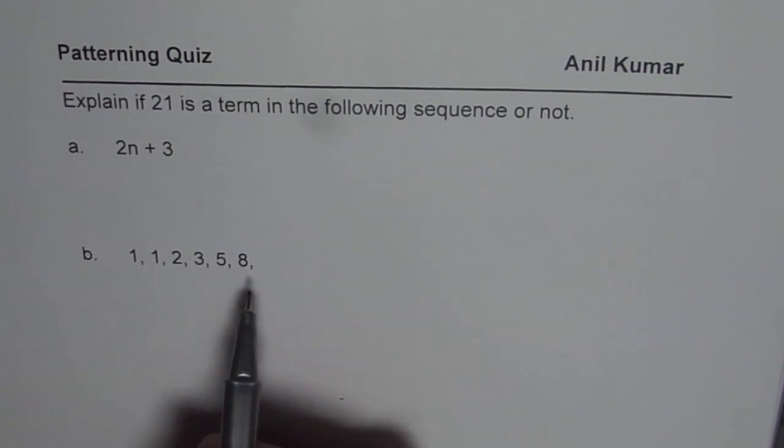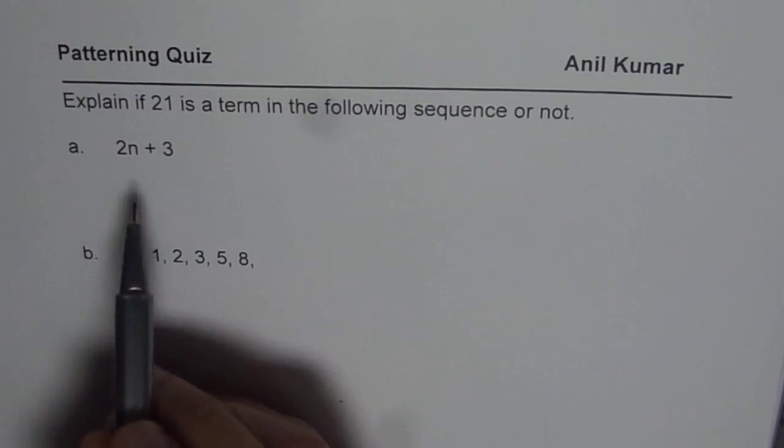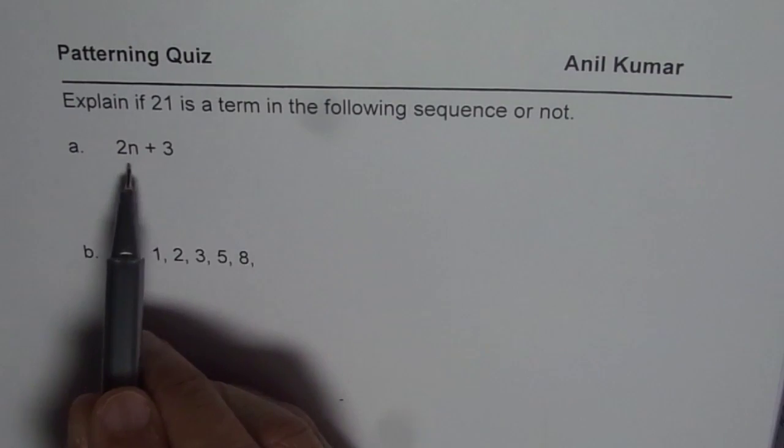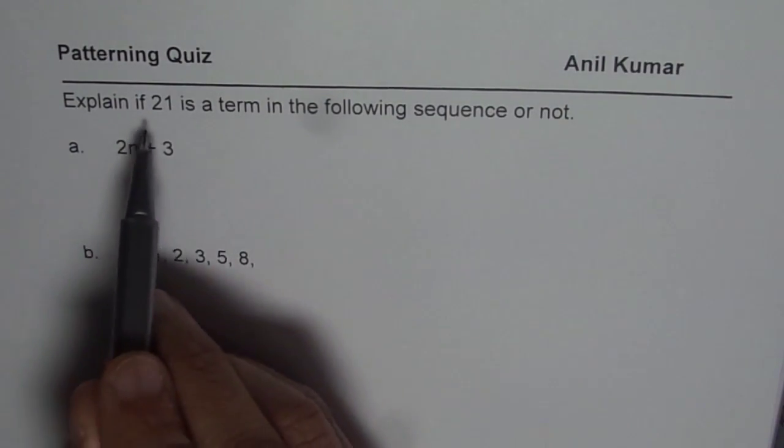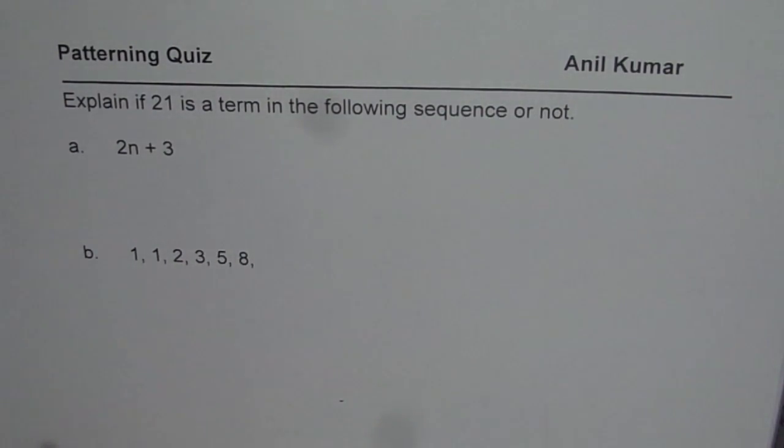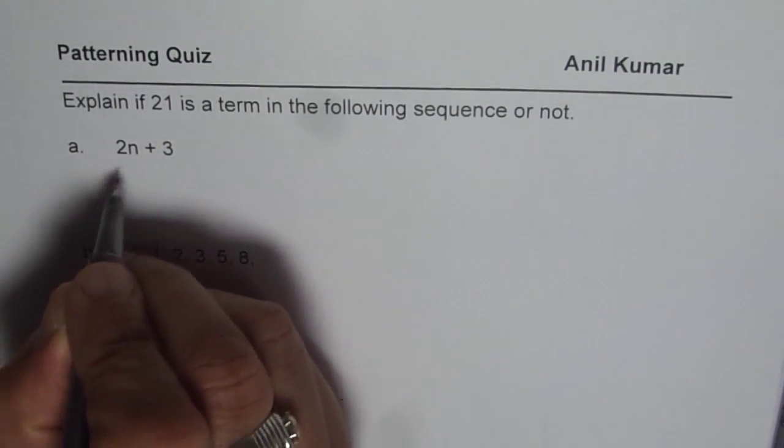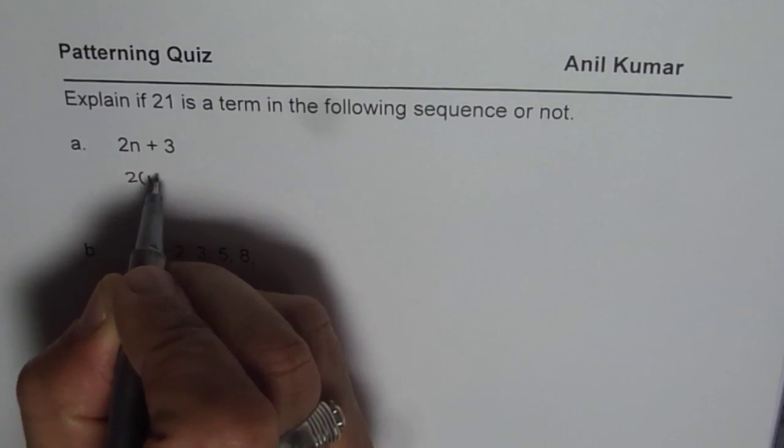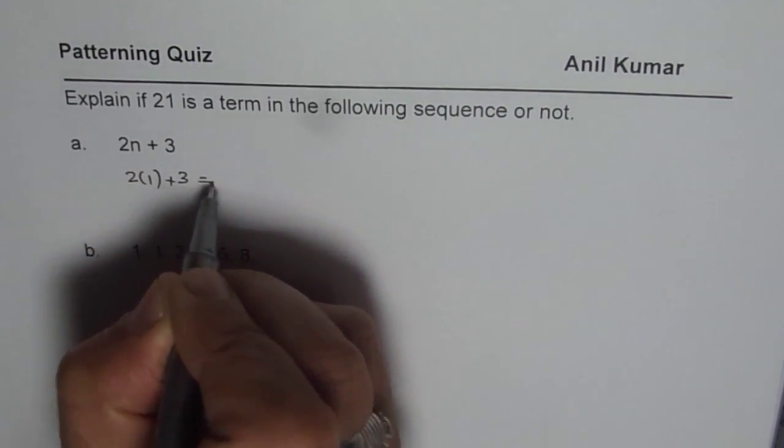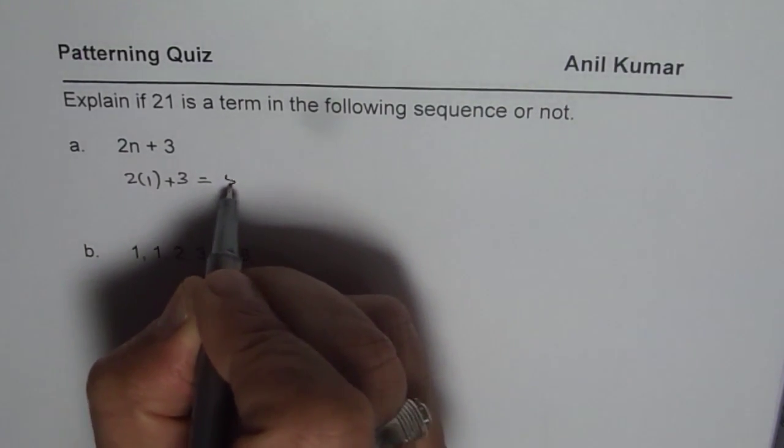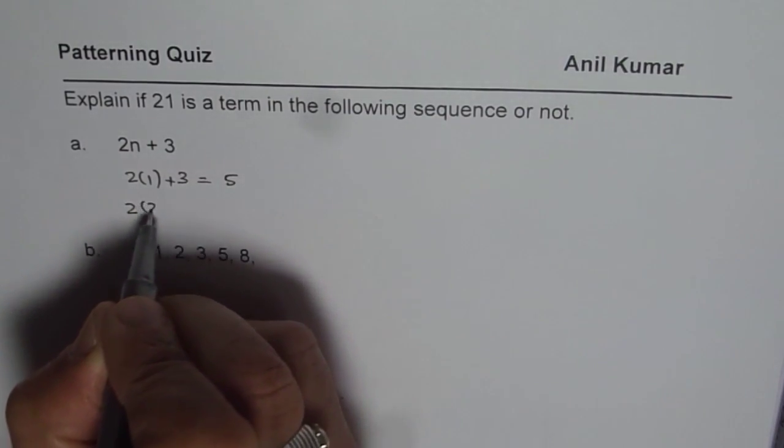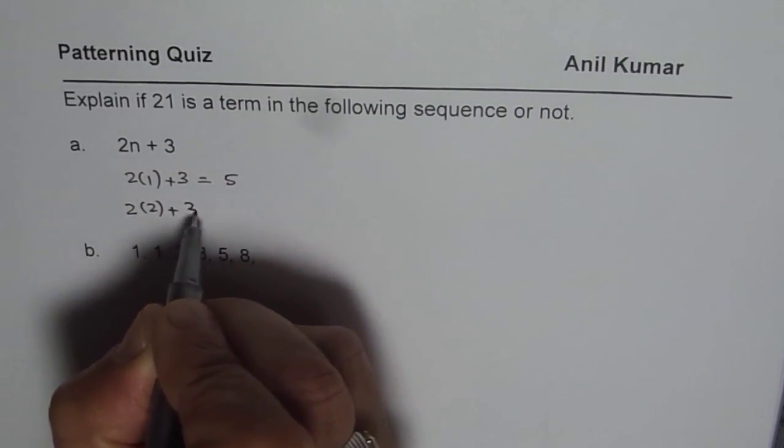Now to answer such a question, what you can do is put different values for n and check whether 21 is in the series or not. So let's begin by putting n as 1. If I write n as 1, 2 times 1 plus 3 equals 2 plus 3 is 5. For n as 2, we get 2 times 2 plus 3. 4 plus 3 is 7.